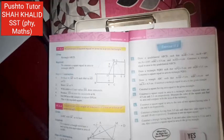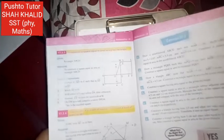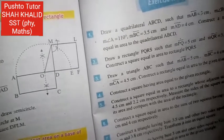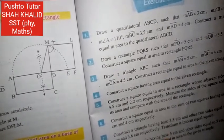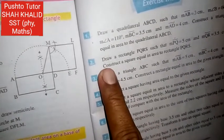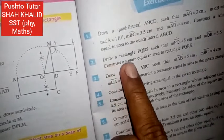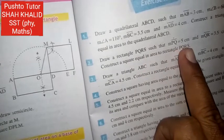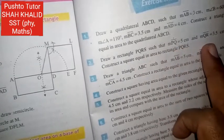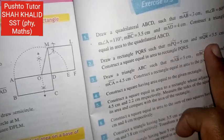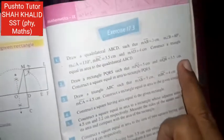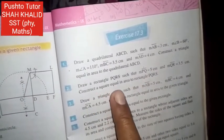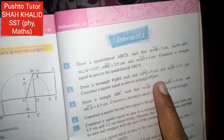Bismillahirrahmanirrahim. Now I am going to lecture in the 9th class of Maths. I am going to talk about practical geometry exercise 17.3, question number 2. Draw a rectangle PQRS such that measure of PQ equal to 5 cm and measure of QR equal to 3.5 cm. Construct a square equal in area to rectangle PQRS.